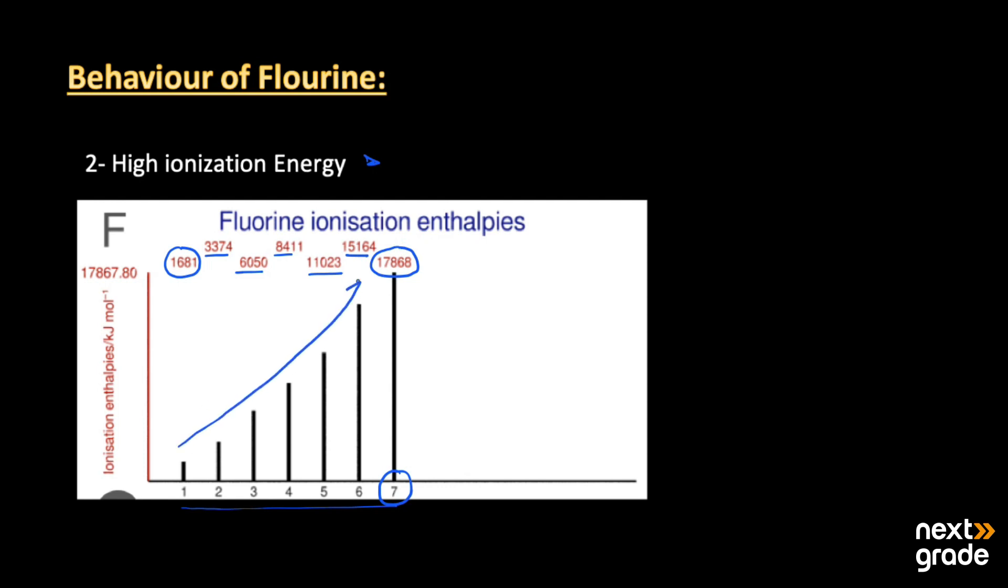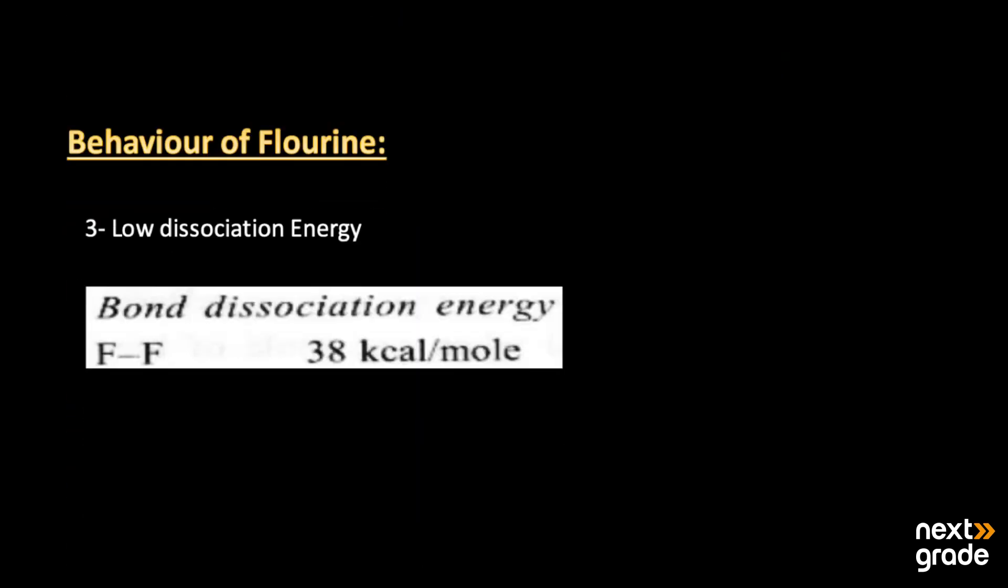Ionization enthalpies or energies are the energies required to remove the electron from the valence shell. If you want to remove the valence shell electrons, the first shell contains two electrons and the last shell contains seven electrons. So if you want to remove all these electrons from the valence shell of fluorine, there is an increase in the ionization.